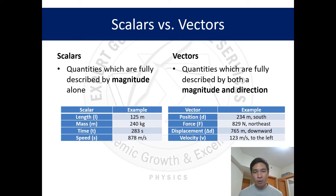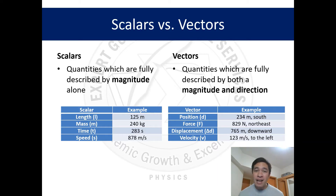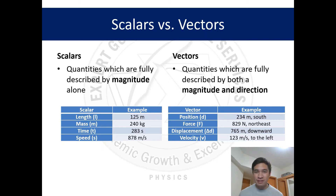Examples of vectors include position, force, displacement, and velocity. Take for instance position: 234 meters south — 234 meters is the magnitude part, and adding 'south,' which is a direction, gives you a vector quantity. Magnitude plus direction gives you a vector.